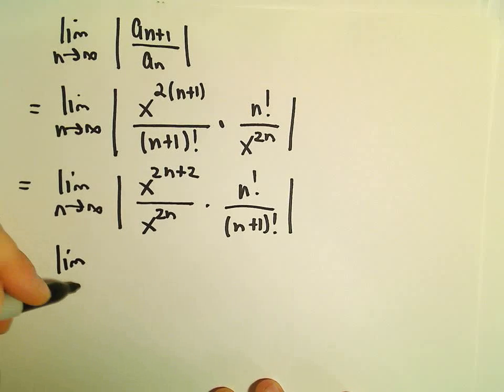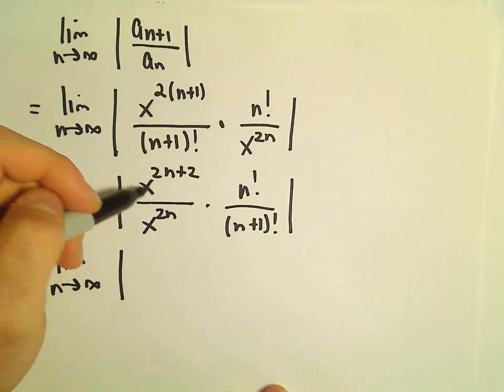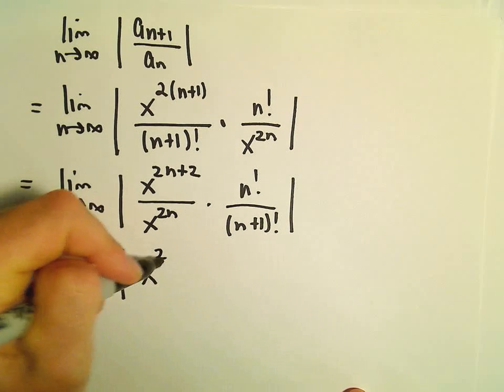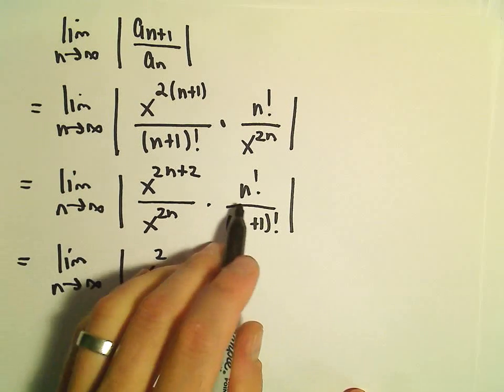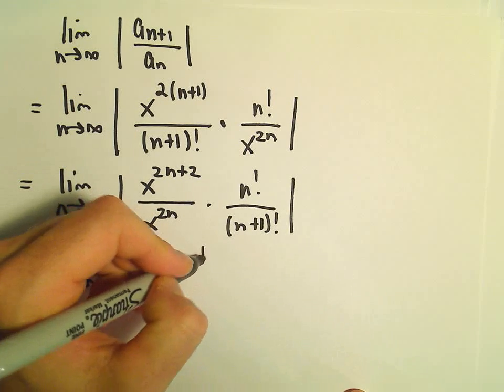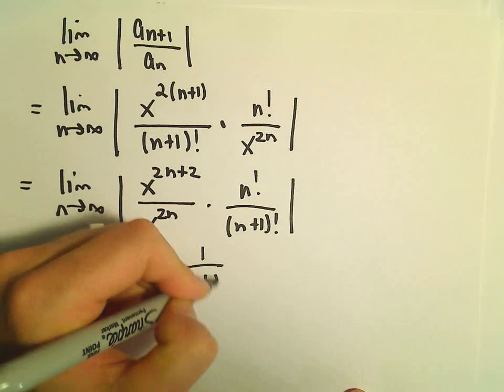Well, if we simplify, we have the limit as n goes to infinity. x to the 2n plus 2 over x to the 2n, we're just subtracting exponents. That'll leave us with x squared. Recall you can just expand out n factorial over n plus 1 factorial. That's going to leave us with 1 over n plus 1.